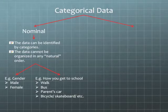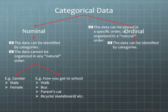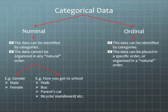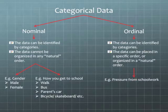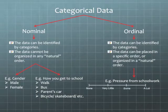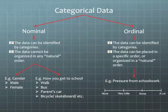Categorical data can also be ordinal. Ordinal data can be identified by categories, and it can be placed in a specific or natural order. For example, pressure from schoolwork can be organized using a continuum with none, very little, some, and a lot of pressure. So it's obvious that this is ordered in a continuum in some natural way.